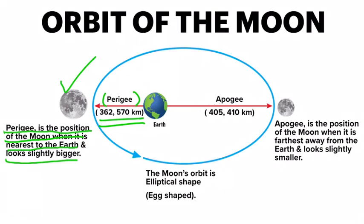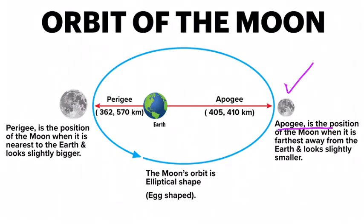On the other hand, you have apogee. Apogee is the position of the moon when it is farthest away from the earth, and the moon looks slightly smaller. The distance between the earth and the moon at apogee is 405,410 kilometers.